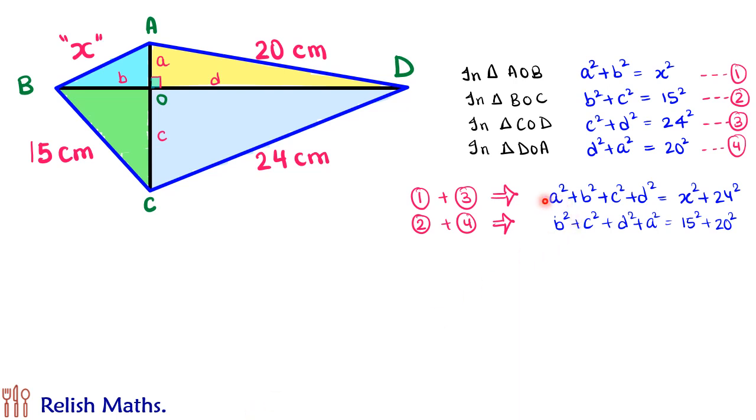Now in these two equations, the LHS is the same, thus we can equate the RHS also. So x² + 24² = 15² + 20². Solve it to get value of x as 7 centimeters.